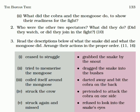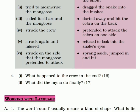Now question number four: 'What happened to the crow in the end?' Crow ko kya hua tha last mein? He was dead. Aur second part kya hai? 'What did the mongoose do finally?' Kya kiya tha mongoose ne? She decided to stay away from this fight.